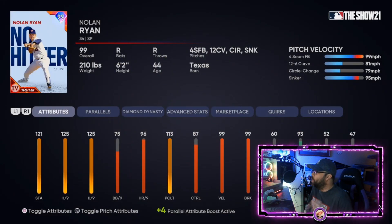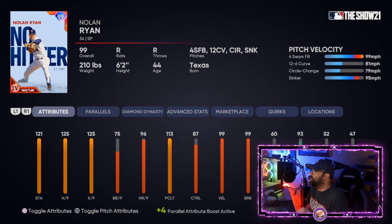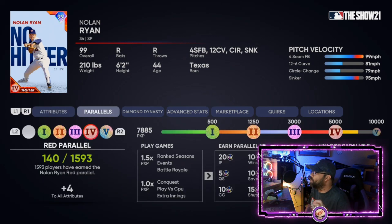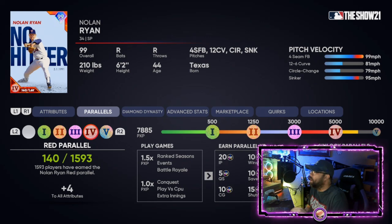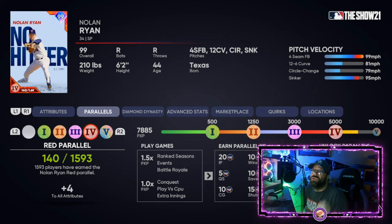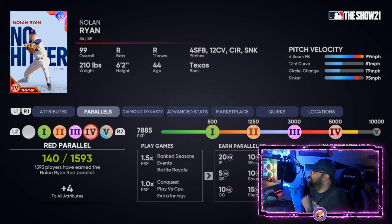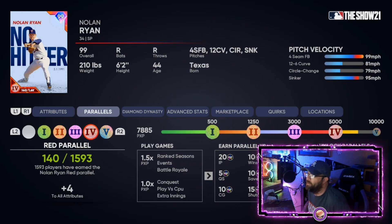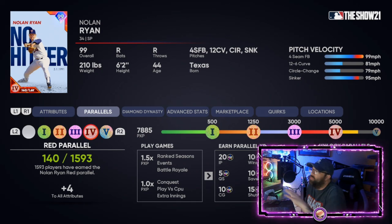The card where this matters the most is the Nolan Ryan card, and a lot of people are discounting it. When you get that circle change, I believe it'll drop to 78 once we get it to P5. One mile per hour might not seem like much, but it is a huge difference-maker. Timing is so important in this game — anything you can do to throw off a opponent's ability to read pitches is going to help you.